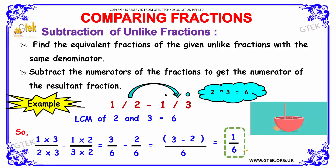Now we discuss subtraction of unlike fractions. In subtraction of unlike fractions, we need to find the equivalent fractions of the given unlike fractions with the same denominator. After that, we subtract the numerators of the fractions to get the numerator of the resultant fraction.